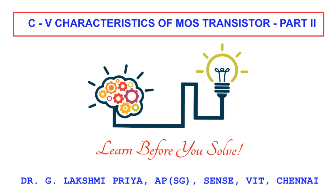Welcome all to the next series on 'Learn Before You Solve.' This video will help you in solving a particular problem on the diffusion capacitance model of a MOS transistor. The first part of the video has covered the theoretical aspects of CV characteristics of MOS transistors, including the gate capacitance model, overlap capacitance model, and diffusion model. The link is provided below in the description box.